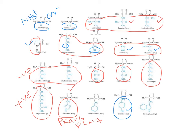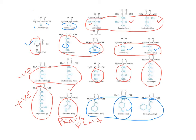Phenylalanine, tyrosine, and tryptophan all contain an aromatic ring, which is why they are referred to as aromatic amino acids. So we have classified amino acids based on their side chains and their characteristics.